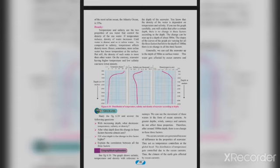Ocean currents are generated because of differences in the properties of seawater. They act as temperature controllers at the global level — the distribution of temperatures gets controlled due to ocean currents — and thus the climate of the Earth is affected by ocean currents.